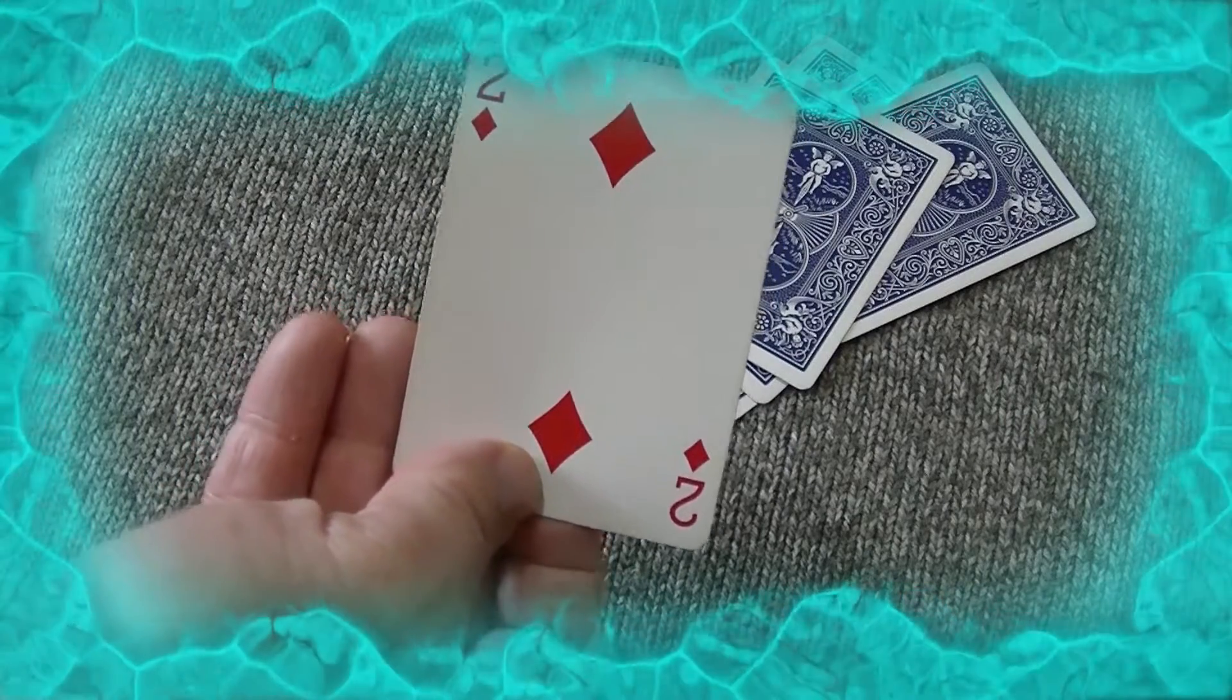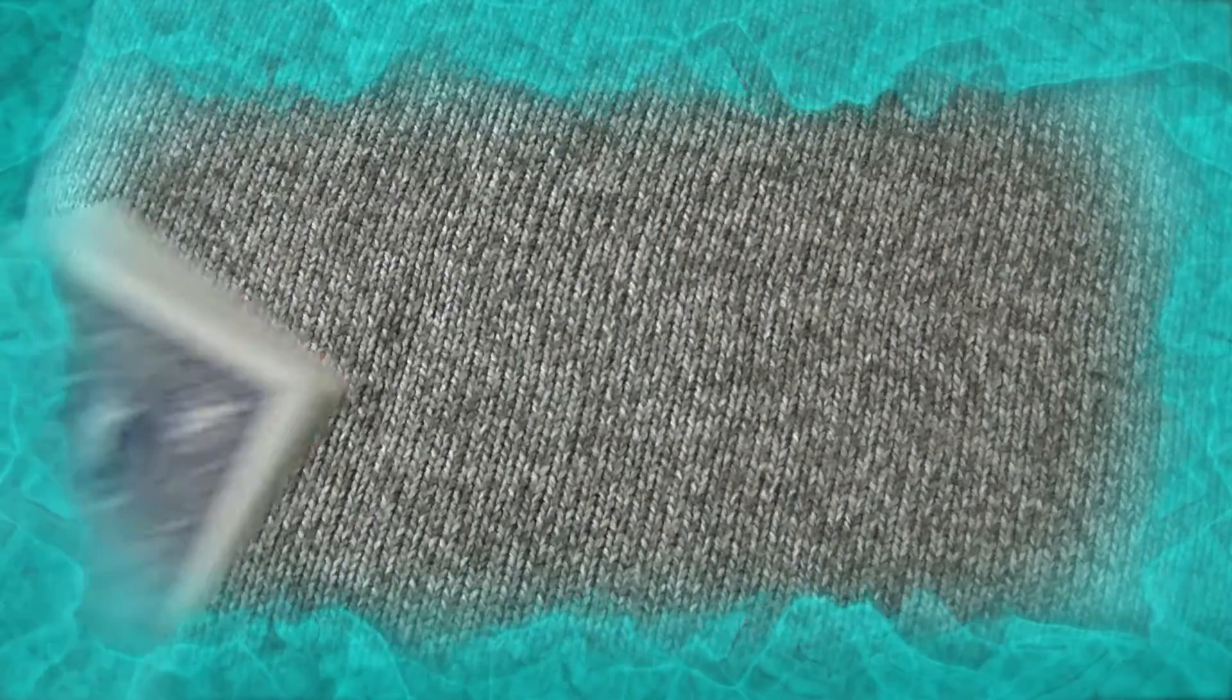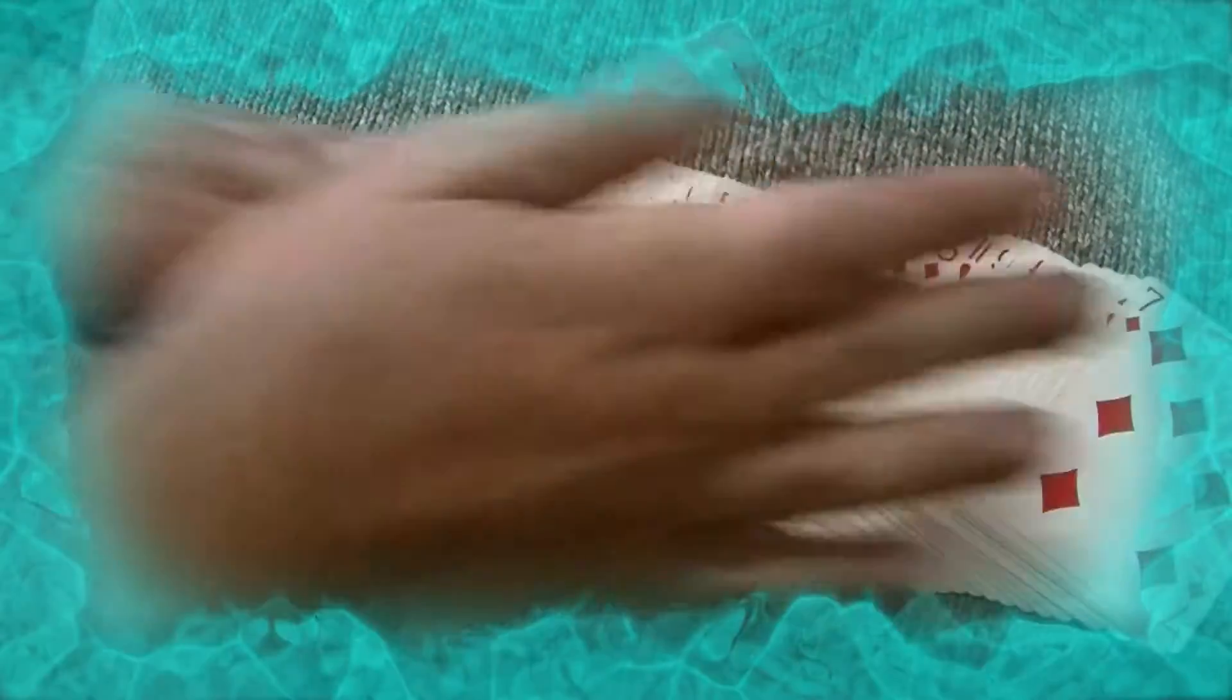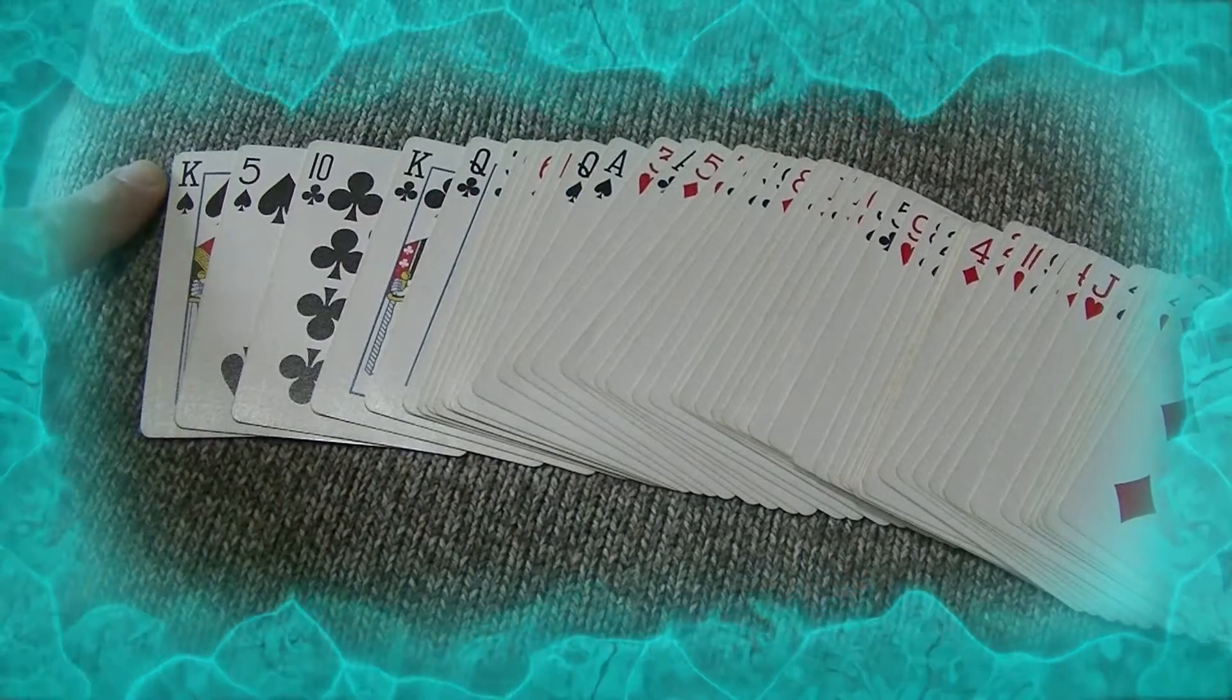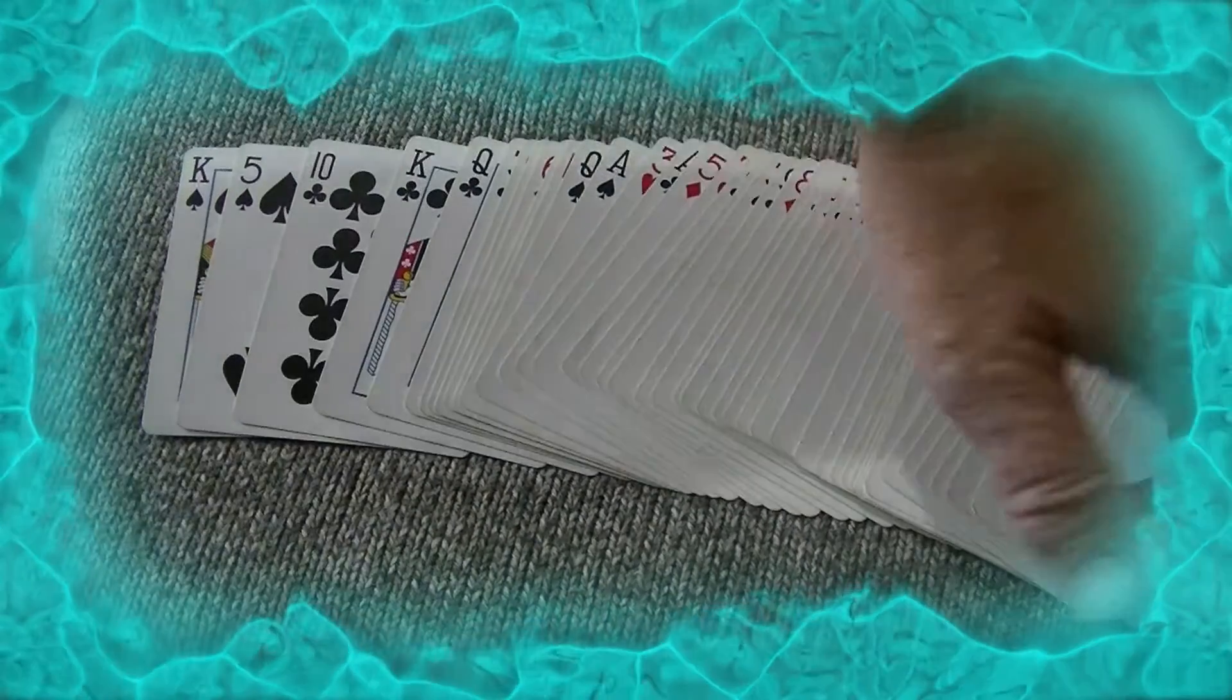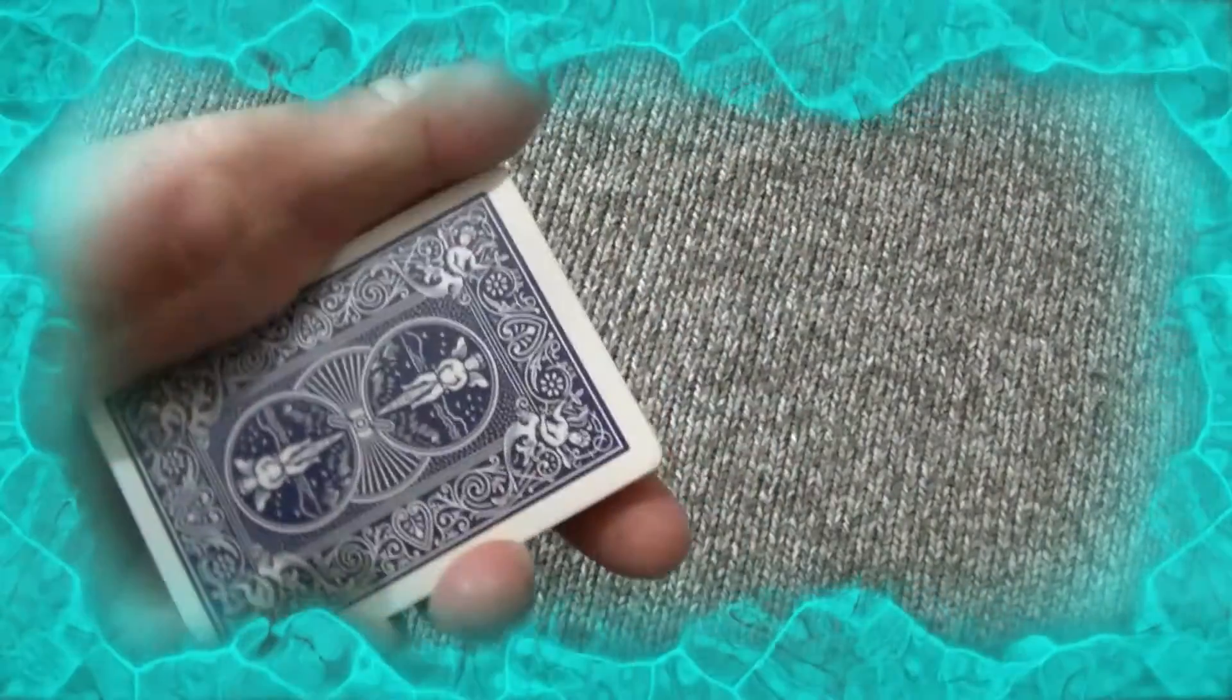Now time for the explanation. For this trick to work you will need one packet of playing cards and they can be shuffled as many times as you wish. It makes no difference. When you spread them out all you do is remember this card here. The king of spades. And when you scoop them up you make sure the king of spades is still on top.